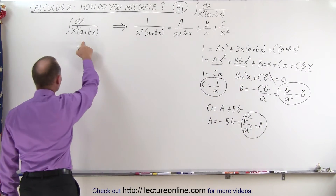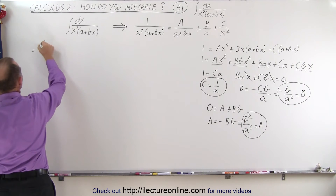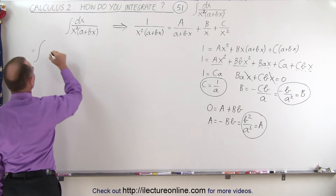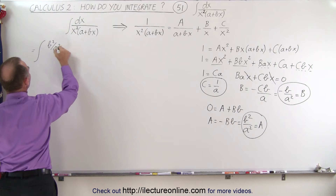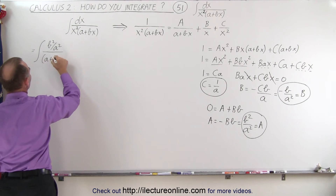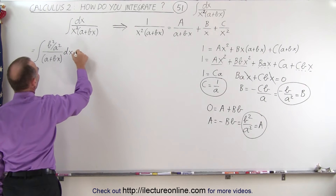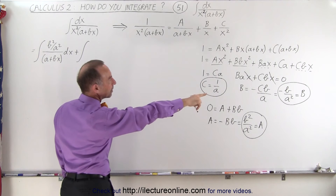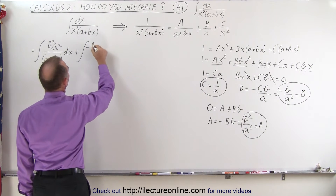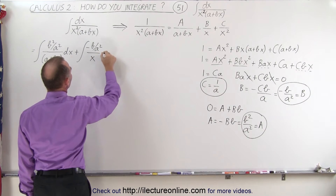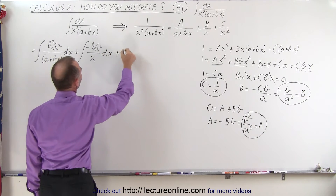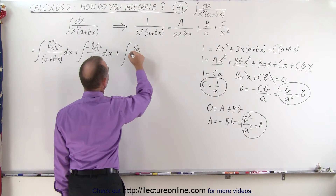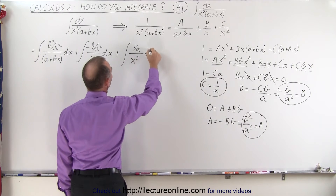Now we have all three constants, so we can rewrite the integral. It becomes the integral of A over (a plus bx) dx — where A is b squared over a squared — plus the integral of B over x dx — where B is minus b over a squared — plus the integral of C over x squared dx — where C is 1 over a.